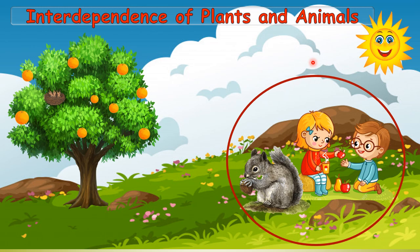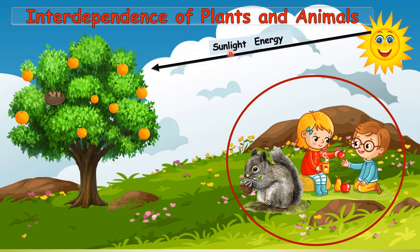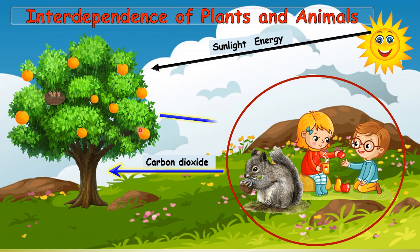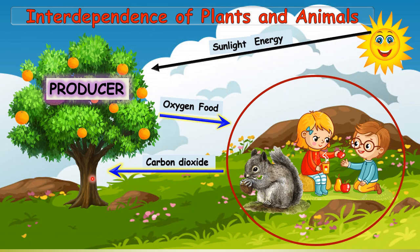As we all know, the sun is the main source of energy and plants get energy directly from the sun in the form of sunlight. Plants are dependent on animals for carbon dioxide, and animals are dependent on plants for oxygen and food. Plants can make their own food — they are not dependent on anybody for food. That is why we call them producers, and animals are consumers because they are dependent on plants for food. In yesterday's class we revised this.